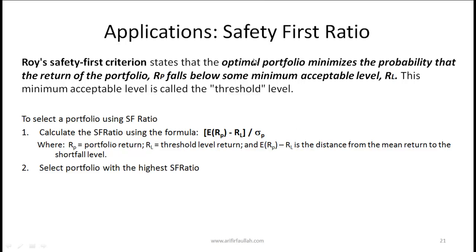Let's talk about some applications of the probability concepts we've learned. One important concept is the safety first ratio, developed by Roy. Roy's safety first criterion states that the optimal portfolio minimizes the probability that the return of the portfolio RP falls below some minimum acceptable level called RL, also known as the threshold level. For example, a client might say they cannot accept returns less than 2%, making 2% the threshold level.